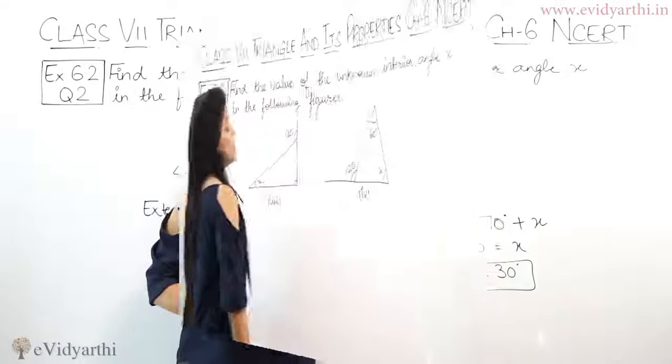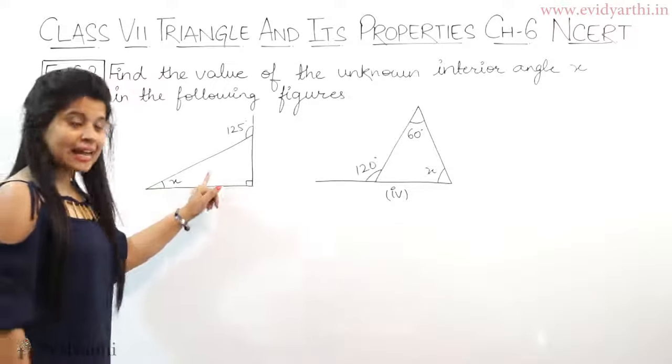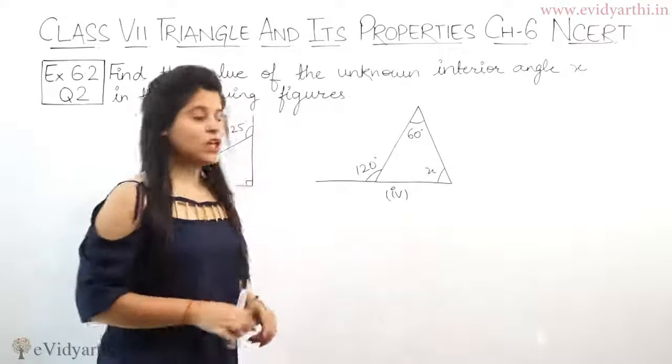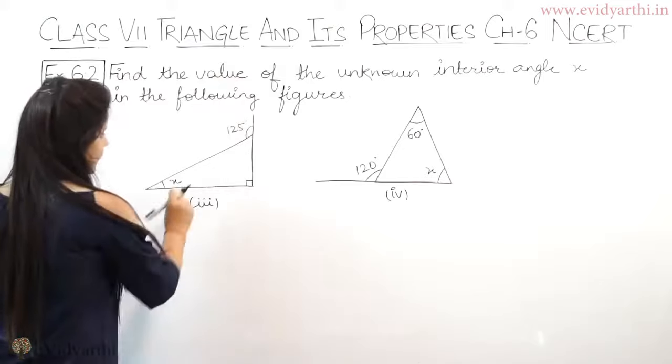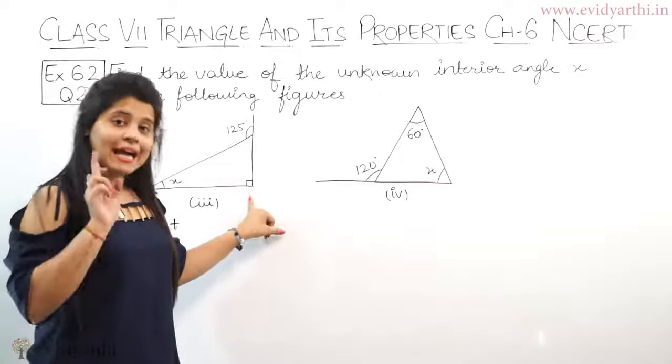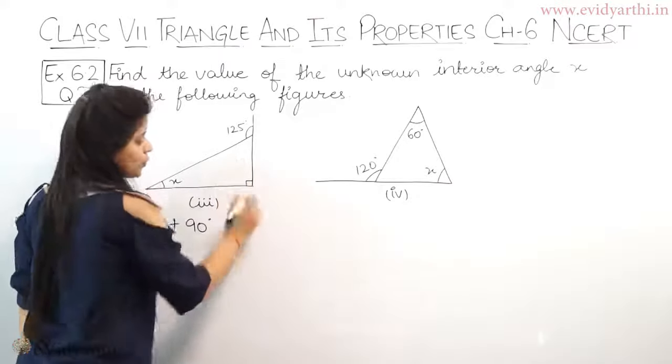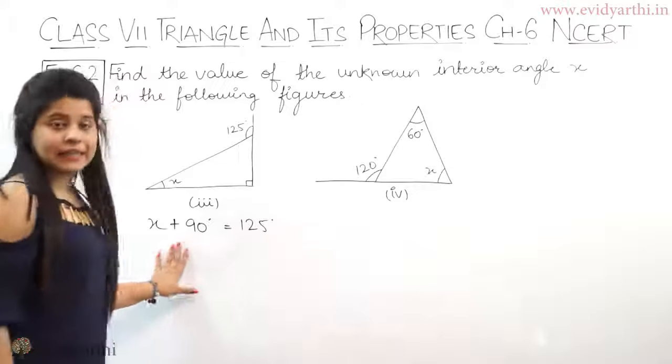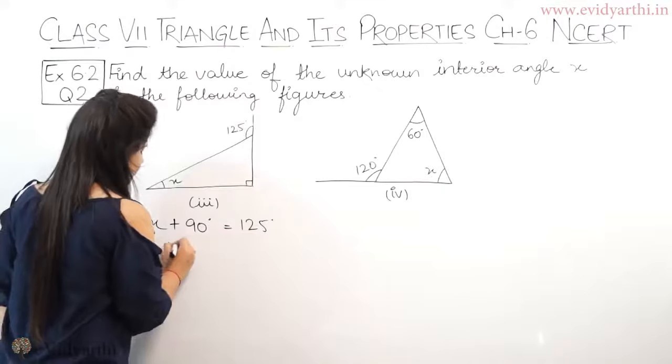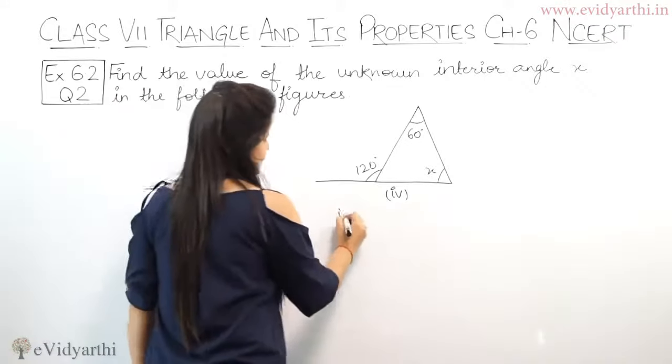Now coming to the third part. Again you need to find the interior angle, exterior angle is given. We'll use the exterior angle property again. The interior angles are x and we can see this is a 90 degree angle. So x plus 90 degrees equals 125, because these two are the opposite interior angles.